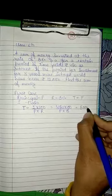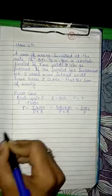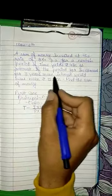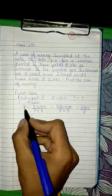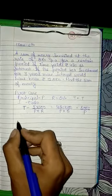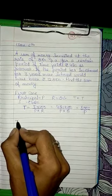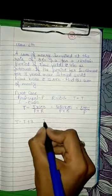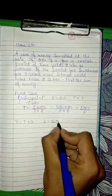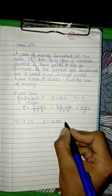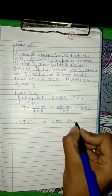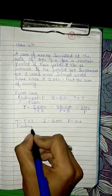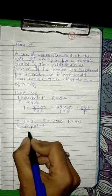Now in the second case, if the period of investment is three years more, that means time will increase by three years. So the new time is T plus 3. This time, the interest given is 12,000 and the rate of interest remains 8%. The principal is still P.